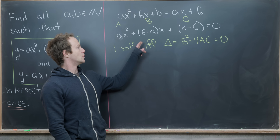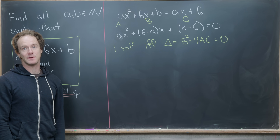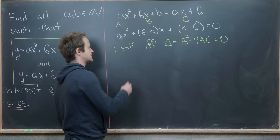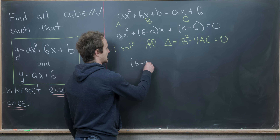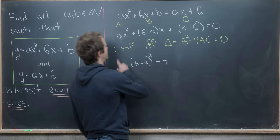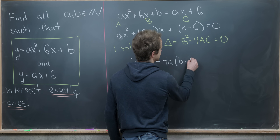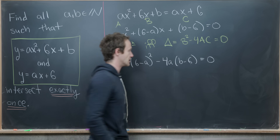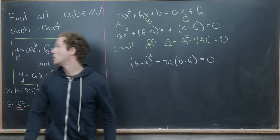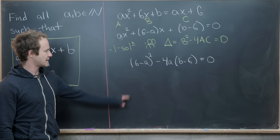This gives us a nice equation involving a and b. We have (6 − a)² − 4·a·(b − 6) = 0. That's the equation we want to solve over the natural numbers.